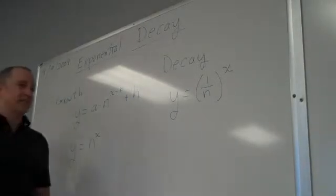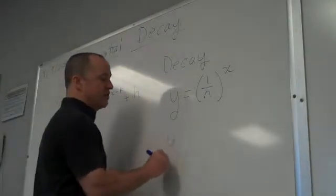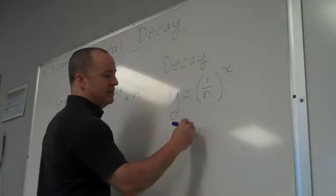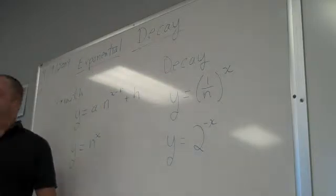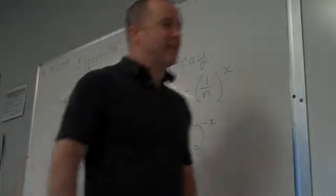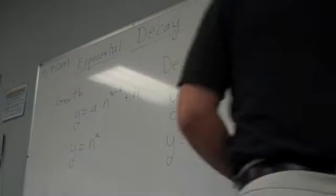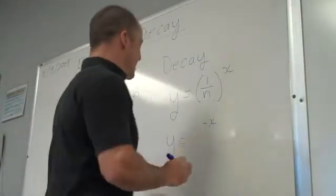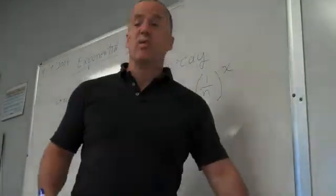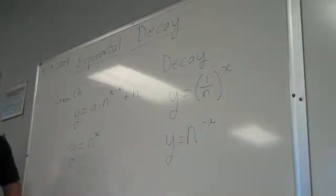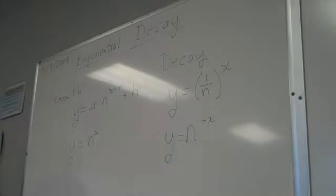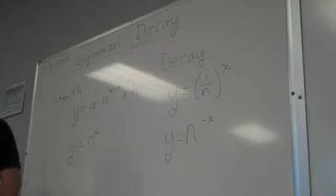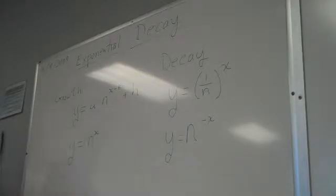There's another way to write this, which is y equals some number raised to the negative x. I did not mean to make that a two, I meant to make that an n. I was skipping ahead in my head to my next example. So that's y equals n to the negative x. What's the difference between these two things? Nothing. Just notation. They're the same exact thing. You need to learn to live with and love both of them.